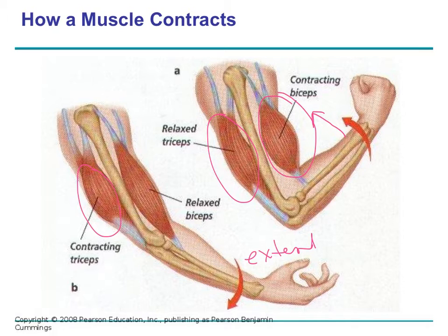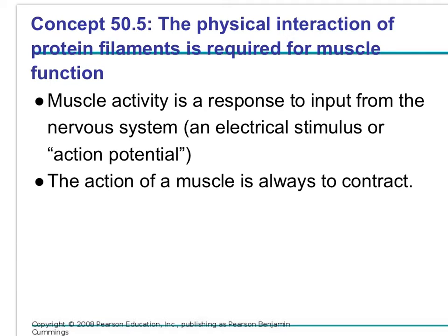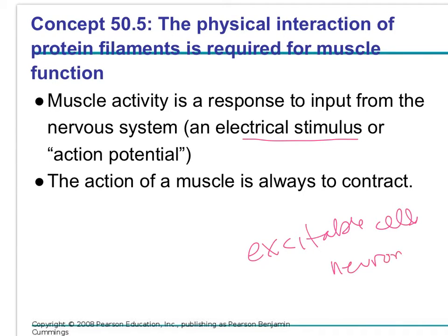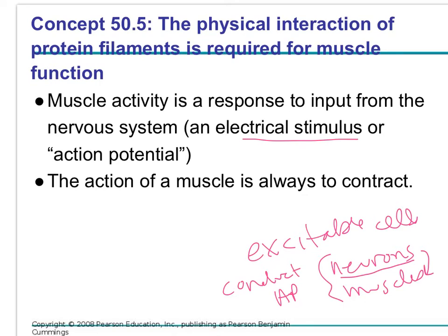So we're going to try to figure out how that happens. In order for a muscle to respond by shortening, it has to receive an electrical stimulus from an action potential. An action potential is an electrical stimulus or a wave of electricity. The only two types of excitable cells in the vertebrate body are neurons and muscle cells — these cells can conduct an action potential. A neuron generates the action potential and spreads it to the muscle, and the muscle responds by shortening.